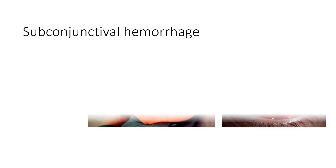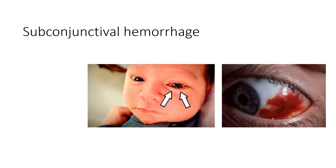Now comes subconjunctival hemorrhage. It is defined as red eye without any discharge. You would often have seen this sign in adults too. This sign disappears spontaneously in a few days or weeks.